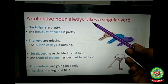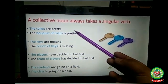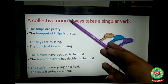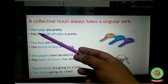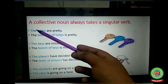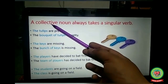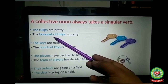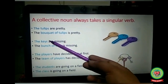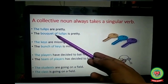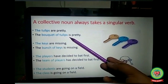Rule: a collective noun always takes a singular verb. Collective nouns refer to a group of persons or things. For example: 'The tulips are pretty' — here we are talking about more than one tulip, so we take the plural verb 'are.' But 'The bouquet of tulips is pretty' — bouquet of tulips is a collective noun, so we take the singular verb 'is.' Next: 'The keys are missing' — more keys, so we take the plural verb 'are.' But 'The bunch of keys is missing' — bunch of keys is a collective noun, so we take the singular verb 'is.'